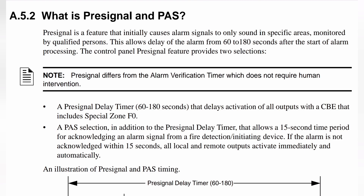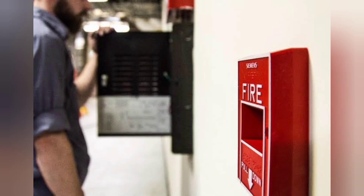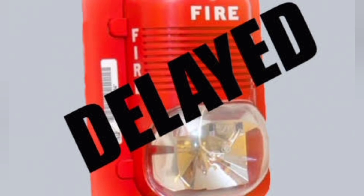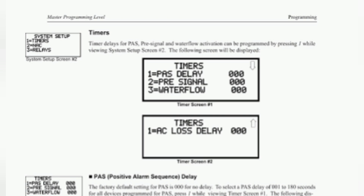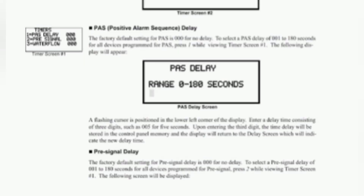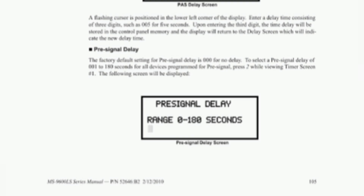Positive alarm sequence is an automatic visual or audible pre-signal that occurs in an area of the facility that is constantly monitored, which creates a short delay between the time it sounds and when the general alarm initiates throughout the building and alerts emergency personnel.